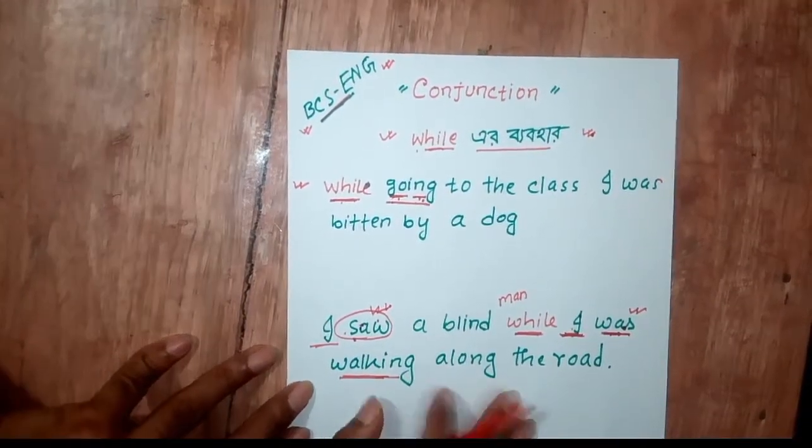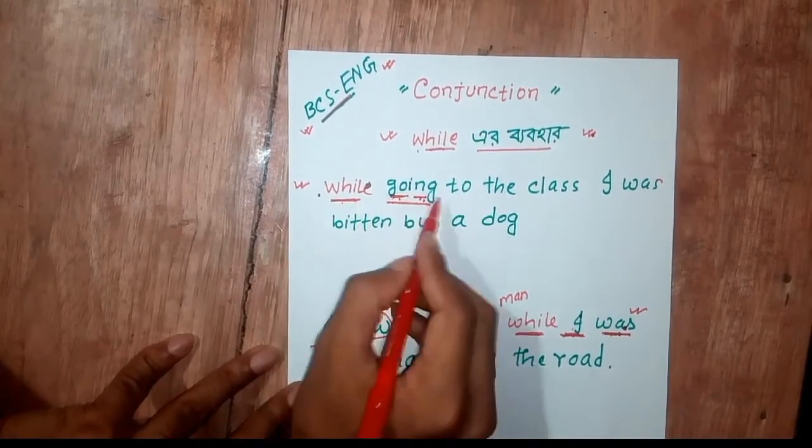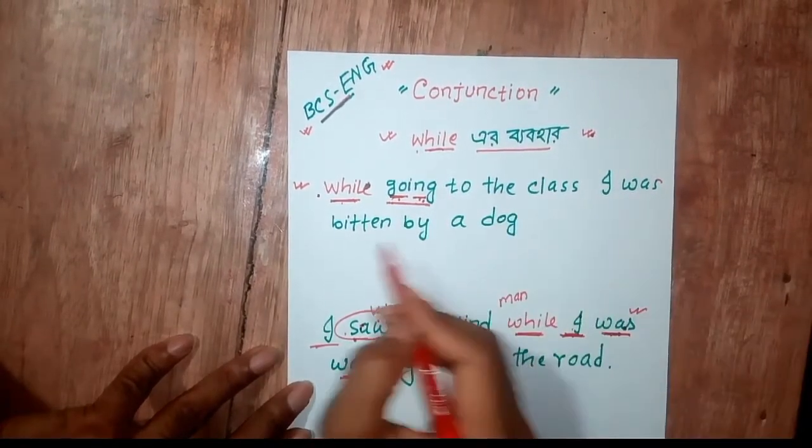The first sentence is, while going to the class, I was beaten by a dog.